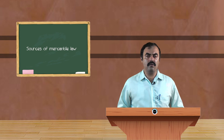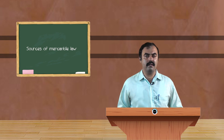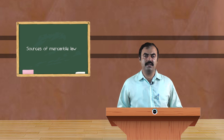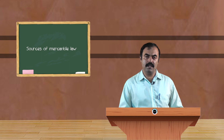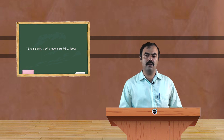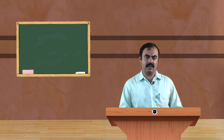To conclude, the sources of mercantile law include: first, English Mercantile Law, which came from English customs; second, statute law, based on the statute or apex body; third, judicial decisions — the decisions made by the judiciary, which has law-making power; and fourth, customs and usage, based on Indian acts. Thank you very much.